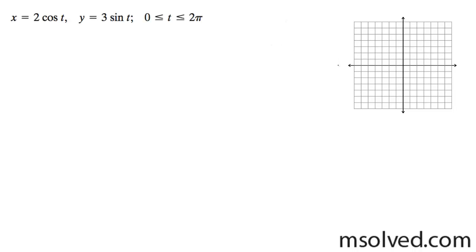So the cosine at 0 is 1, so 2 times that, and then the sine is 0. And then for pi over 2, cosine is 0, and then sine is 1 times 3.